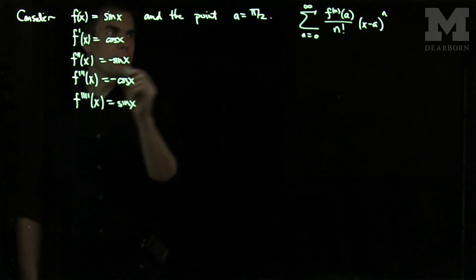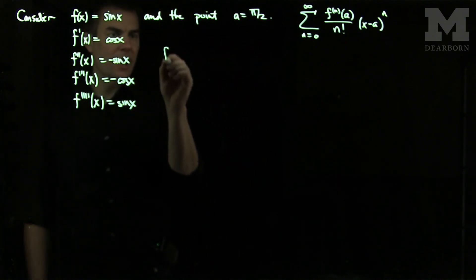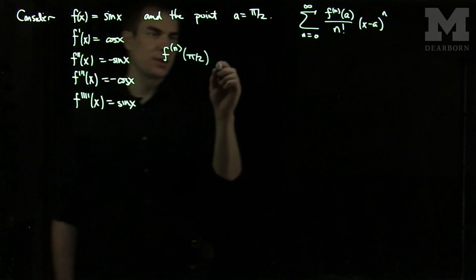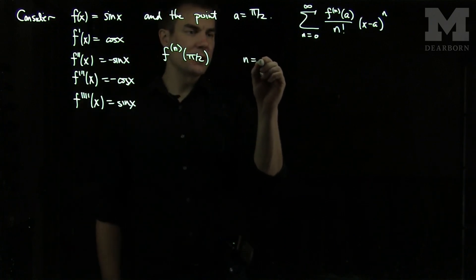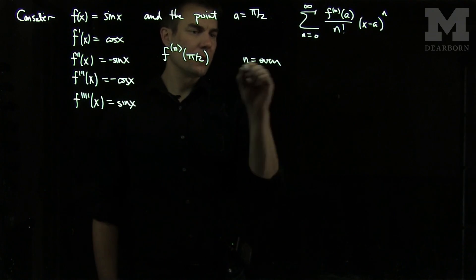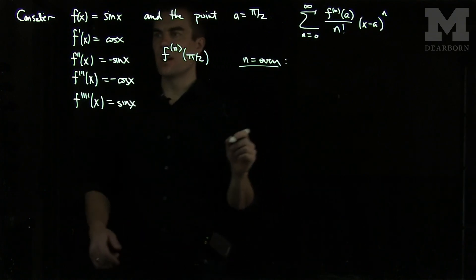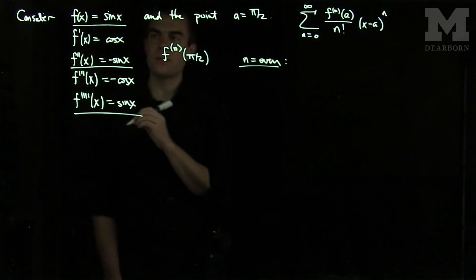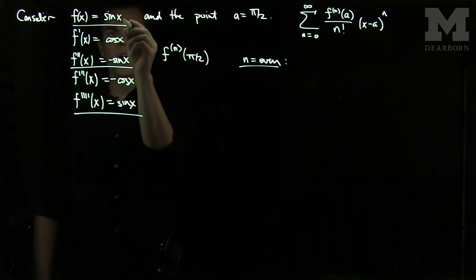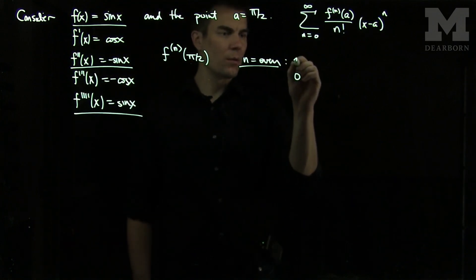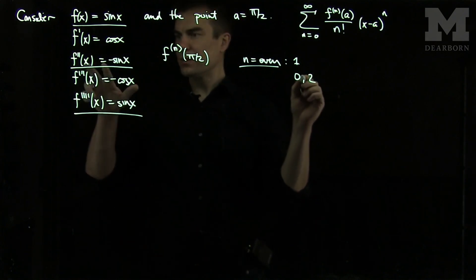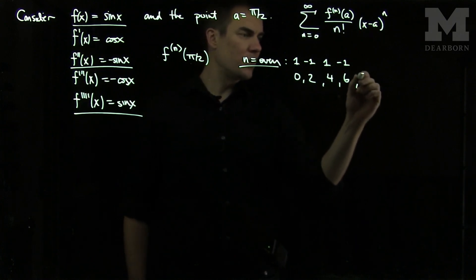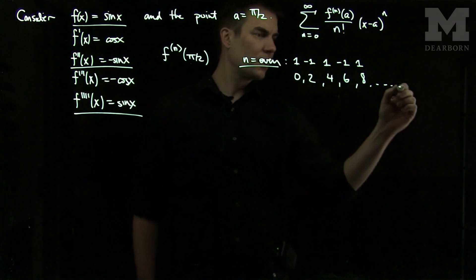When we plug in pi over 2 and look at f^n of pi over 2, there are two cases to consider. When n is even — 0, 2, 4, ... — plugging pi over 2 into sine gives 1. So at n=0 we get 1, at n=2 we get negative 1, at n=4 positive 1, at n=6 negative 1, at n=8 positive 1, and so on.